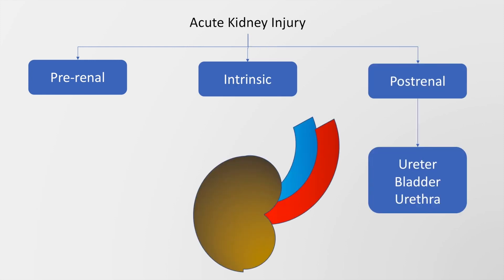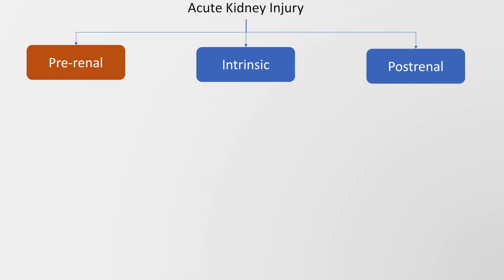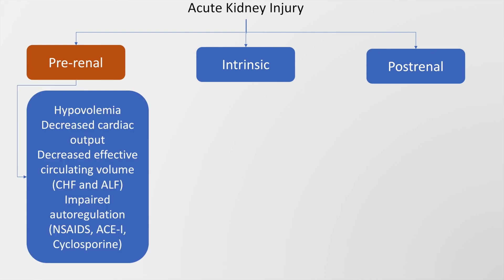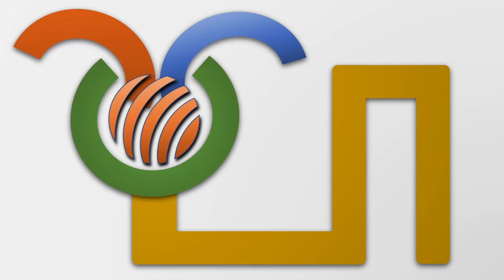Post-renal acute kidney injury generally indicates a pathology in the ureter, bladder, and urethra. Pre-renal acute kidney injury may be due to hypovolemia, decreased cardiac output, decreased effective circulating volume such as in patients with congestive heart failure and acute liver failure, and impaired autoregulation due to non-steroidal anti-inflammatory drugs, ACE inhibitors, and cyclosporine.